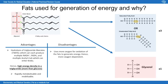So why are fats used for the generation of energy? The main reason is that they have a very high energy density compared to glucose, and that is predominantly down to the fact that each fat or triglyceride contains three fatty acid chains, and each of those chains can give rise to acetyl-CoA, which can then go into the Krebs cycle and oxidative phosphorylation.